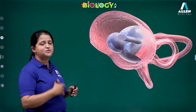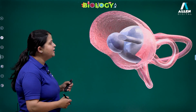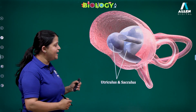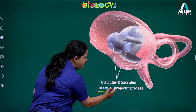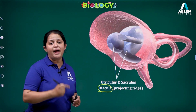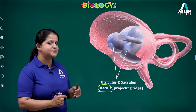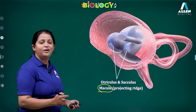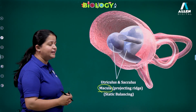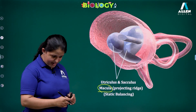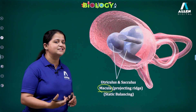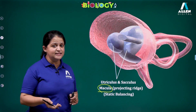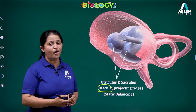The vestibular apparatus also contains two sac-like structures: the utriculus and the sacculus. Both the utriculus and sacculus contain receptors known as macula. So crista ampullaris and macula are the two receptors of the vestibular apparatus that help in balancing. The crista ampullaris is involved in dynamic balancing, whereas the macula — a projecting ridge-like receptor — is involved in static balancing, such as when we nod our head or bend. Both crista and macula are involved in balancing, while the cochlea is mainly involved in hearing.